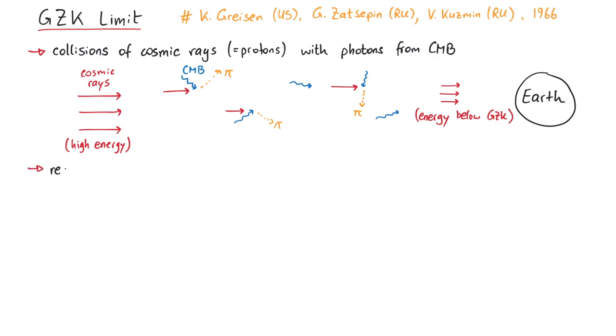Now let's go into more detail. The reaction process looks like this. A proton collides with a cosmic microwave background photon. This creates a delta plus particle, which quickly decays into either a proton and a pion, or a neutron and a pion.